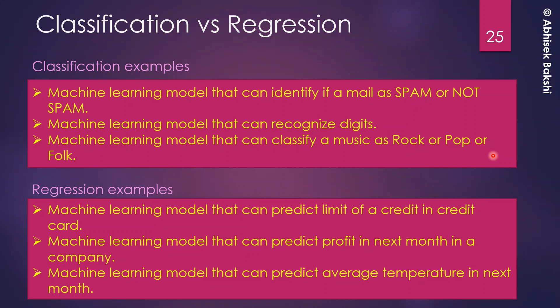In classification problems, the labels of the examples will be in discrete form — such as yes or no, or rock, pop, or folk. In regression problems, the labels will be in continuous value form — such as salary, profit margin, credit limit, or temperature. This is a very important difference between classification and regression.